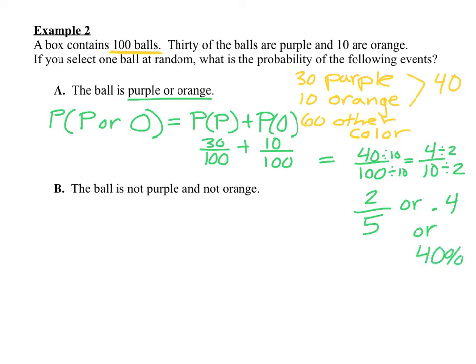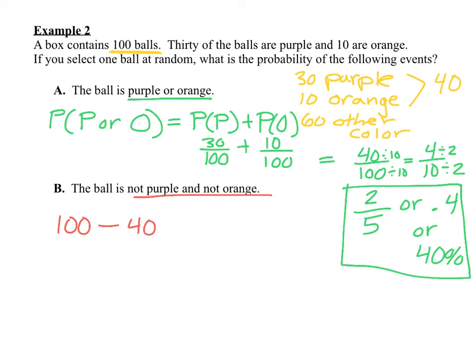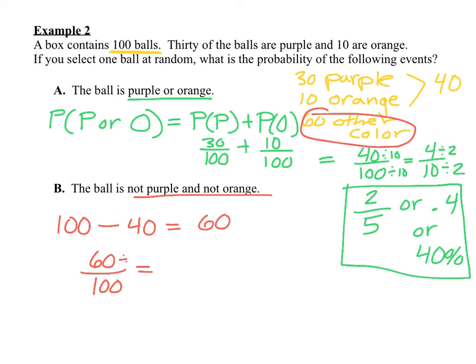What's the probability that the ball is not purple and not orange? We had 100 balls, and 40 of those were purple or orange, leaving 60 other colors. So the probability that the ball is not purple and not orange would be 60 out of 100. Reducing by dividing by 20 gives us 3 out of 5, or 0.6, or 60%.